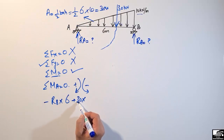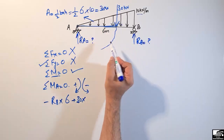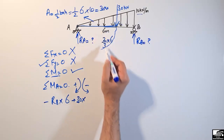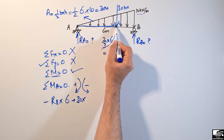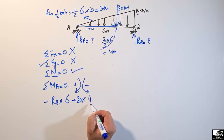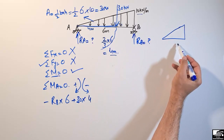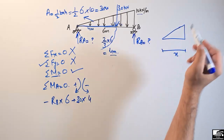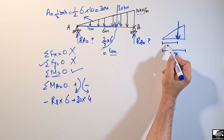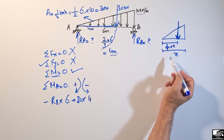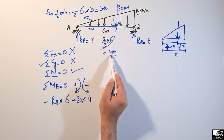The moment arm for the 30 kilonewton load is the distance from point A to the centroid of the triangle, which equals two-thirds of 6 meters. Two-thirds of 6 gives us 4 meters. For a triangle, from the higher-load end the centroid is always located at two-thirds of the base length, and the remaining one-third is at the other end. So the moment arm here is 4 meters.